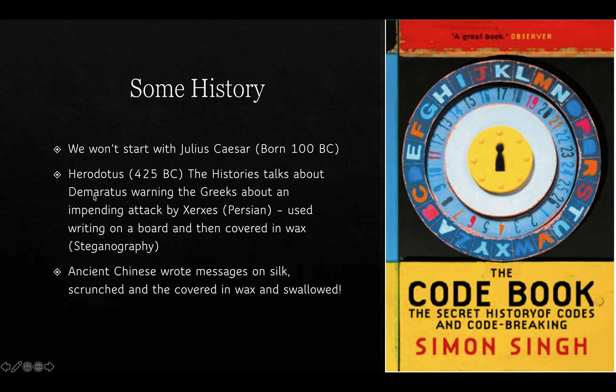Why he wanted to do that after being exiled is a good question. The Persians, led by Xerxes, were about to attack, and Demaritus used a method of writing a warning message on a board and then covering it with wax. The messenger passed through checkpoints, and the Greek officials simply melted the wax to reveal the message. This is the concept of steganography — hiding messages — and in modern steganography we do that within digital images and sound.